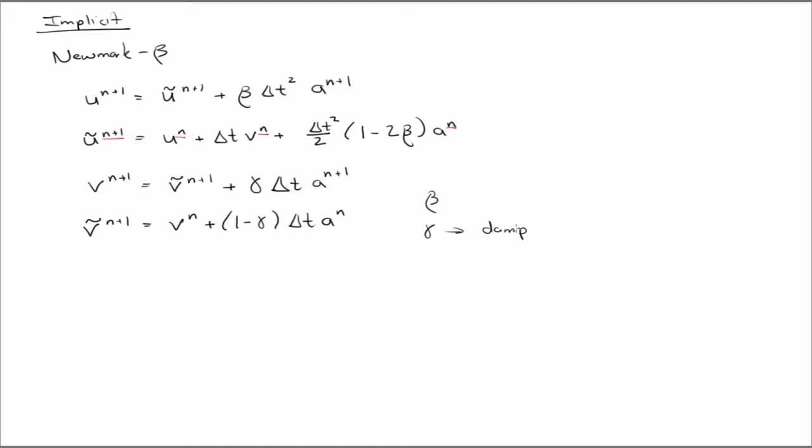So it adds a viscous damping on the velocity. And this is important because now we're going to take longer time steps, but there can be higher frequency information in the system that when you take a large time step can cause numerical ringing, and this parameter can damp it out.